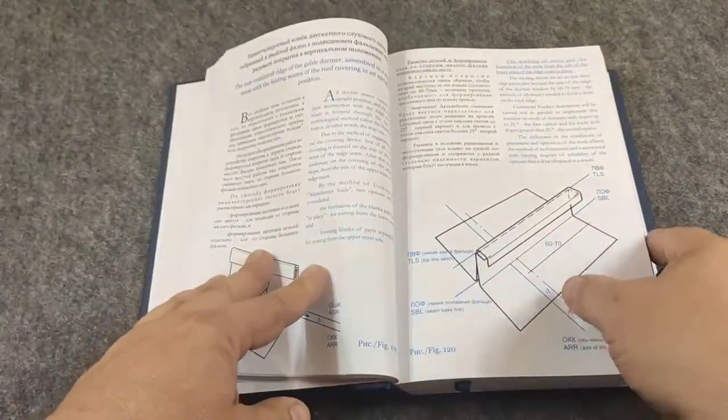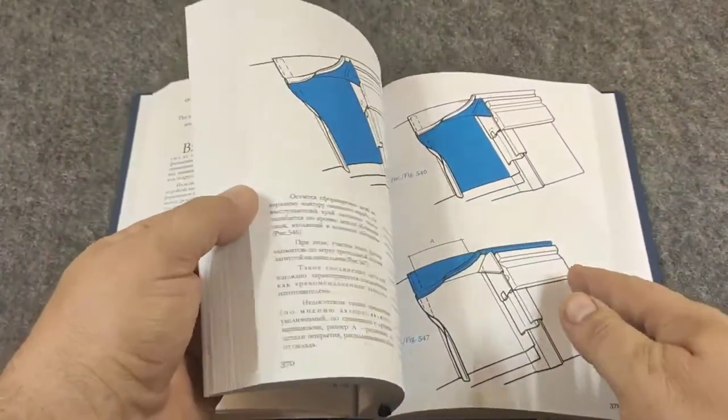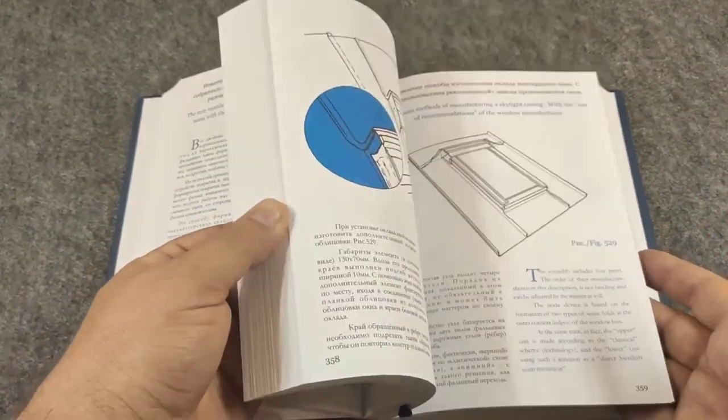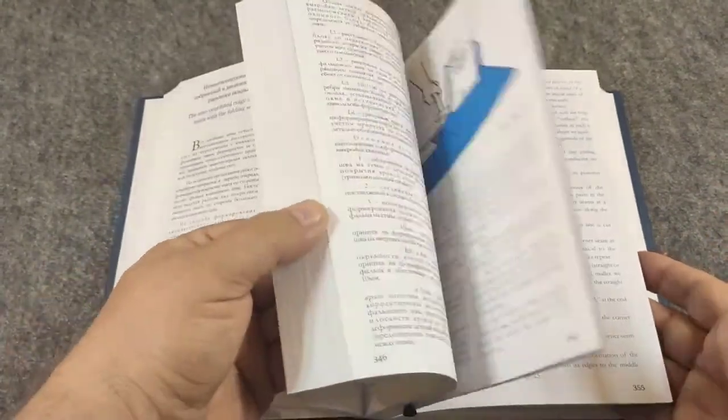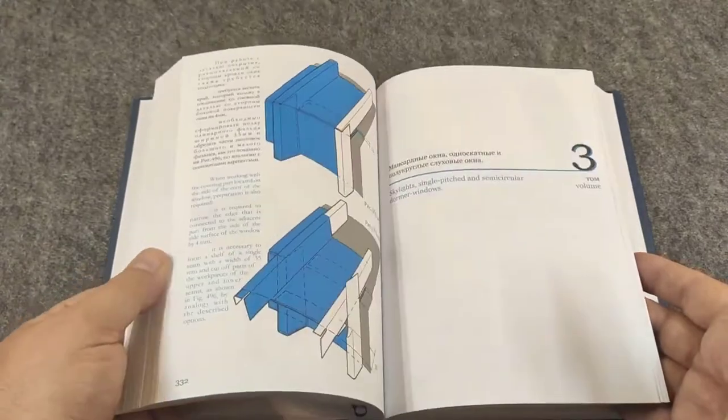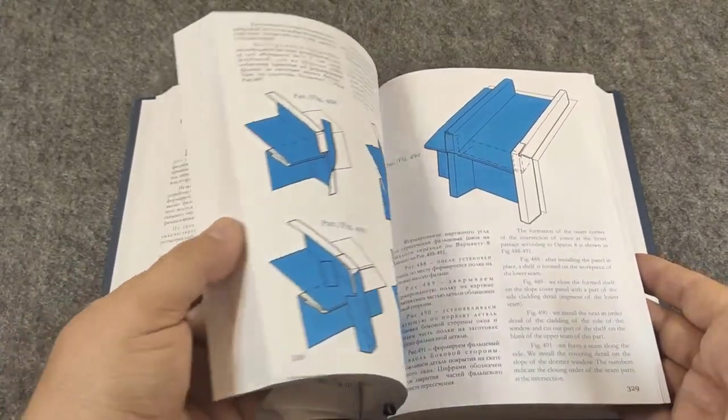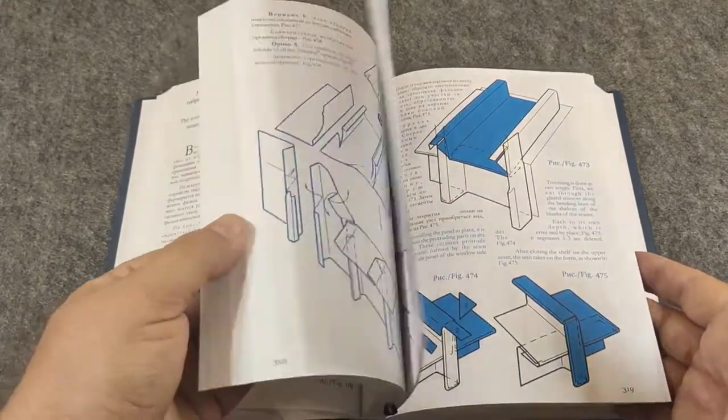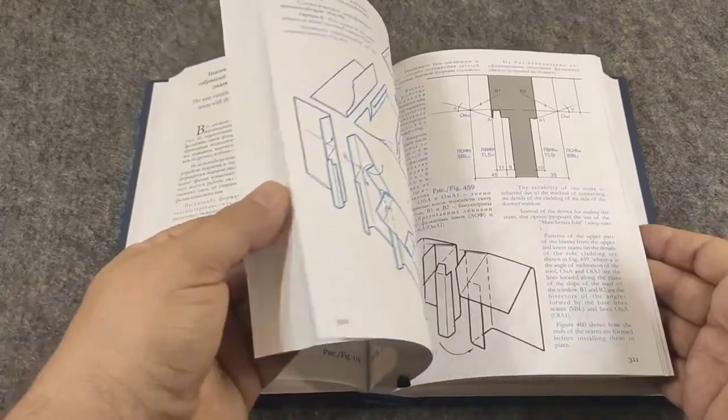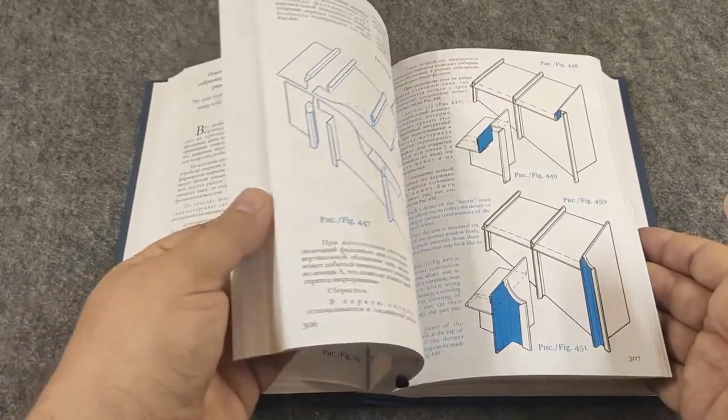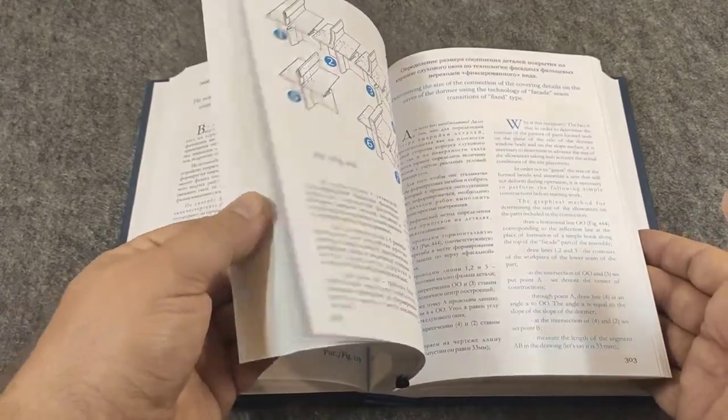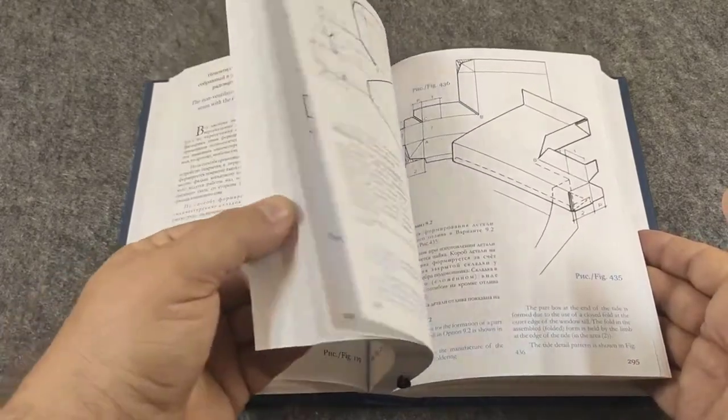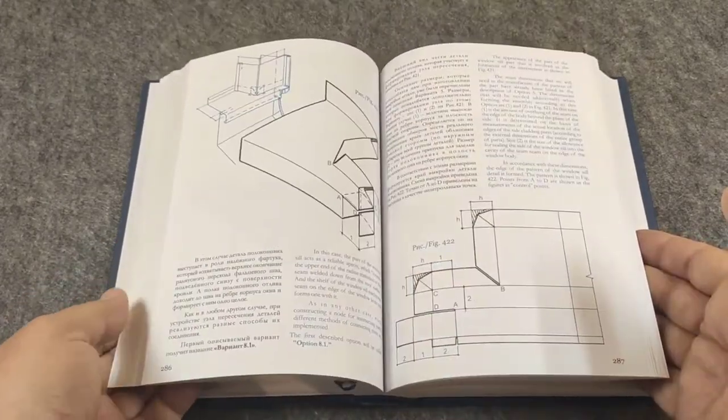The monograph is devoted to the study of technological methods for the device of roofing and cladding of the gables of dormer windows using the Double Rebate Technology. Special attention is paid to the issue of systematization of known technological methods according to general characteristics and conditions of their application in the production of roofing works.